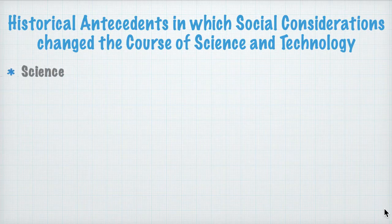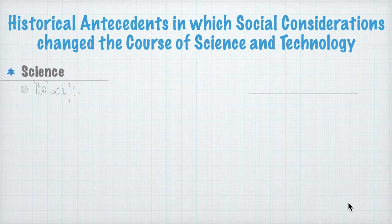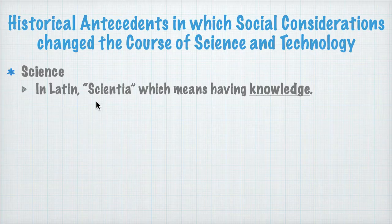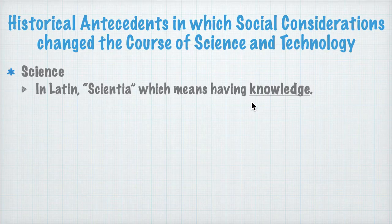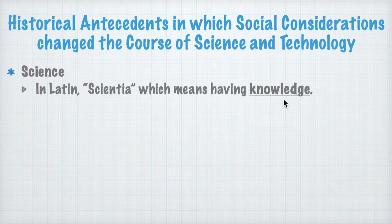First of all, of course, is science — science, technology, society. So what is science? We have a lot of definitions for science, but let's go to the very root of it all. In Latin, science came from the Latin word scientia, which means having knowledge. So science is like having knowledge. One may think of science as a subject, a discipline, or a field, but let's be very basic and have it as having knowledge.